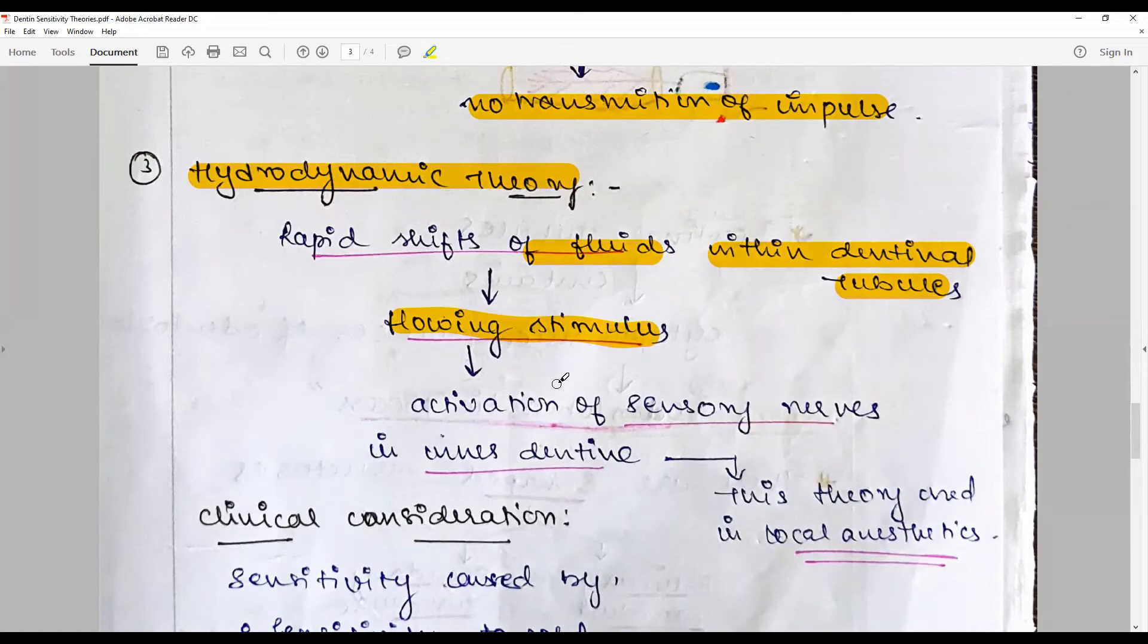At the DEJ, it is transferred across to the odontoblastic process of the dentinal tubules. This flow of fluids and the ions—such as proteins, potassium, sodium, calcium ions—causes an activation of the odontoblast process that is sensed by the sensory nerves in the inner dentin near the plexus of Raschkow, and it is interpreted as pain.